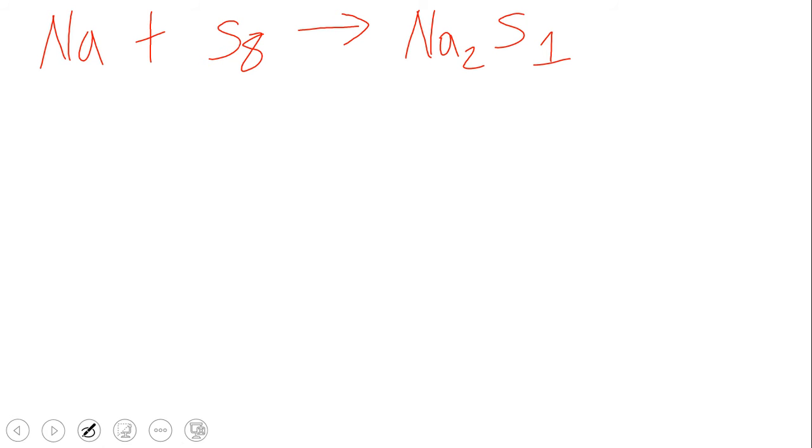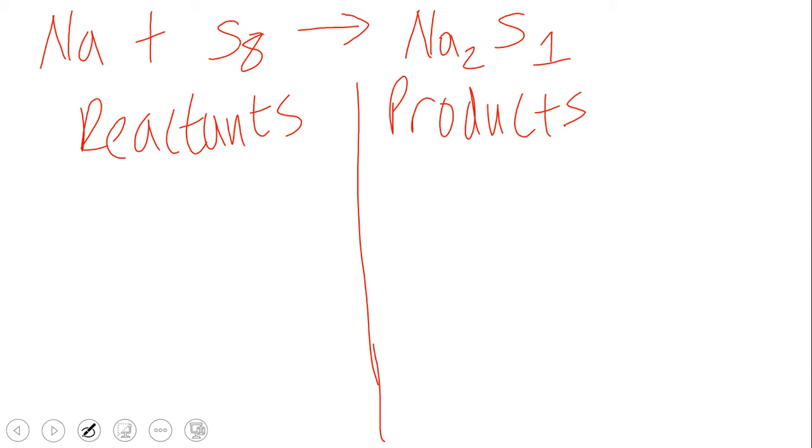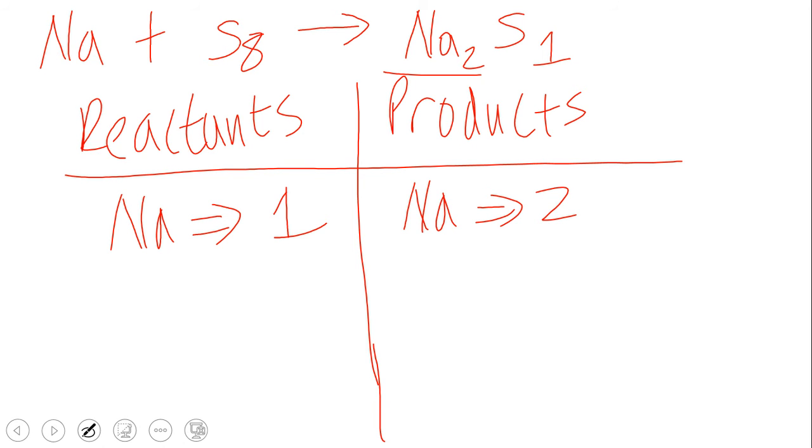On this side we'll have the reactants, and on this side we'll have products. Now for Na on this side there's only two, for S we have eight, and for S here we have one.